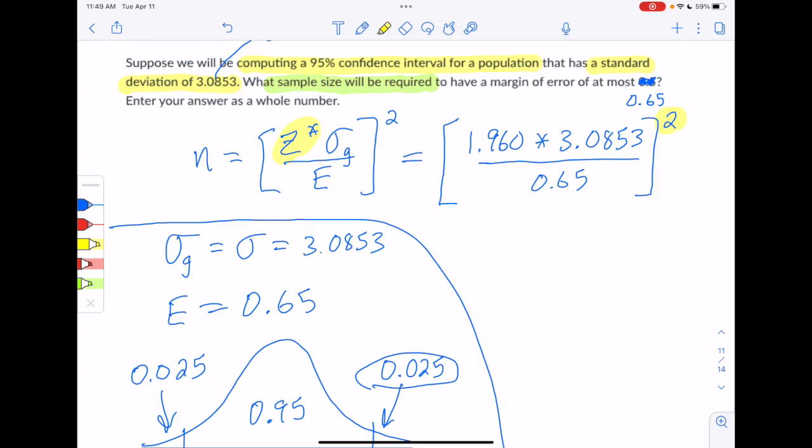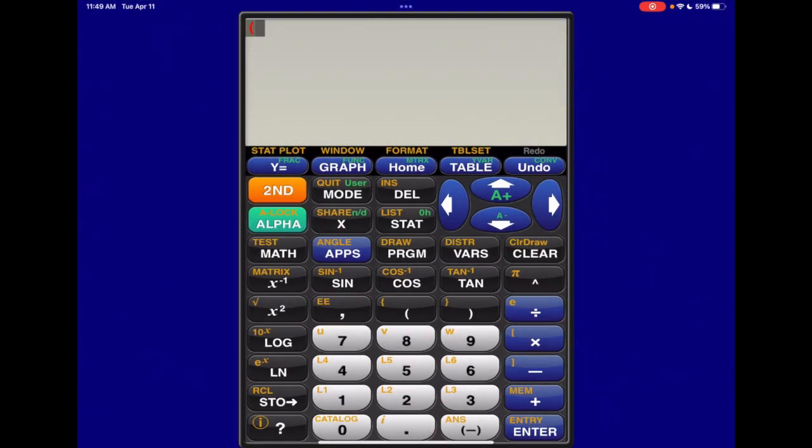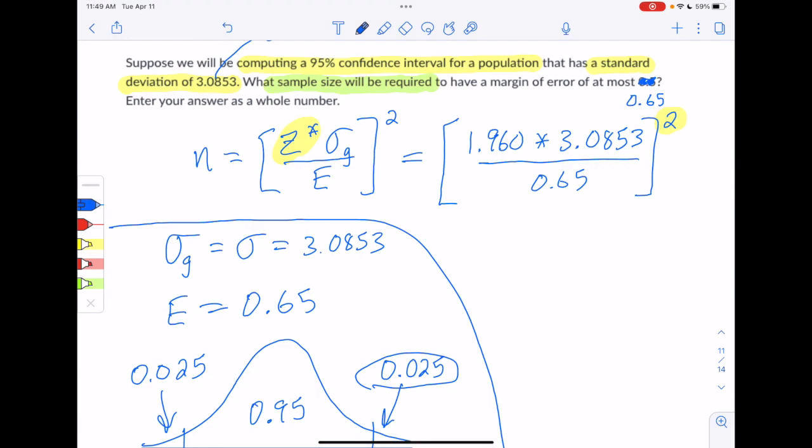Let's jump over to the calculator and take care of that squaring. Well, the whole calculation really. So key thing, open parentheses at the beginning because it's the whole fraction that's squared. So then we do our z score times our sigma. And then divide by the desired margin of error. And we do all three of those numbers before we close the parenthesis. And then we square to make sure we're squaring that whole fraction with all three numbers inside. So we get 86.55 roughly. Let's go ahead and take that back.